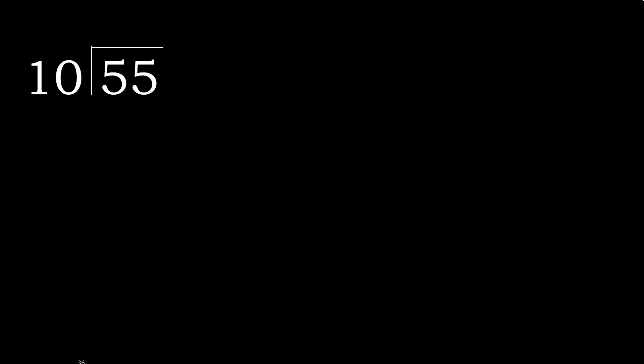55 divided by 10. 5 is less, therefore next. 55 is not less, therefore with 55. 10 multiplied by which number is nearest to 55 but not greater? 10 multiplied by 6 is 60, which is greater. Multiply by 5 is 50. 50 is not greater.